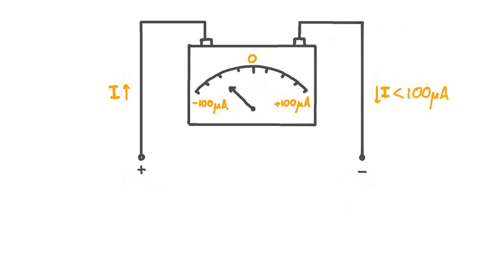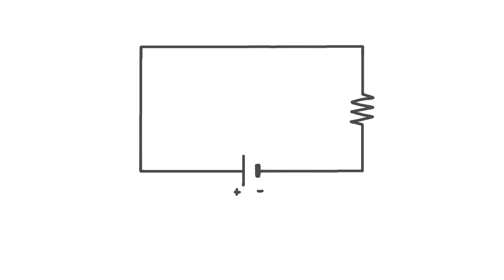So it looks like for small currents we could just use a galvanometer as an ammeter, and if we could find a way to extend the range of the galvanometer, then we could use it for larger currents as well. However, if we try to just use a galvanometer as an ammeter, we run into a problem due to the fact that a galvanometer has its own internal resistance.